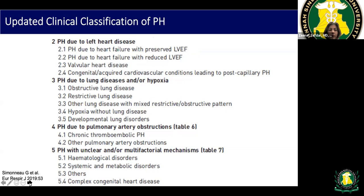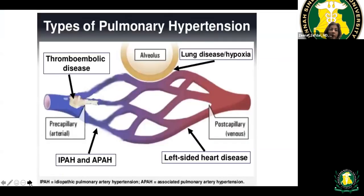Group four is chronic thromboembolic pulmonary hypertension — not just acute PE, but chronic PEs that become incorporated into the pulmonary vasculature. Group five is multifactorial with unclear etiology, including sarcoidosis, hematological malignancies, Gaucher's disease, and sickle cell disease. If the problem is lung disease, that is group three; post-capillary is group two; chronic clots are group four; and idiopathic or associated disease is group one.